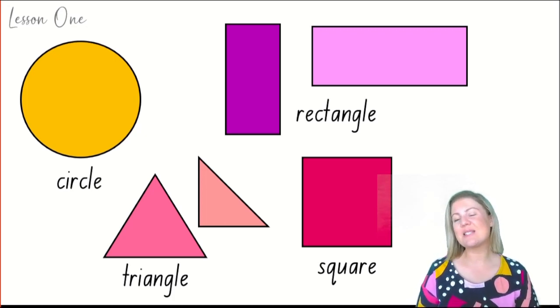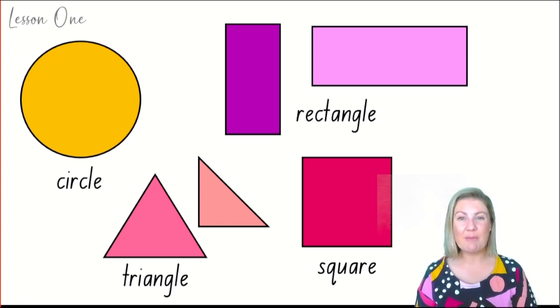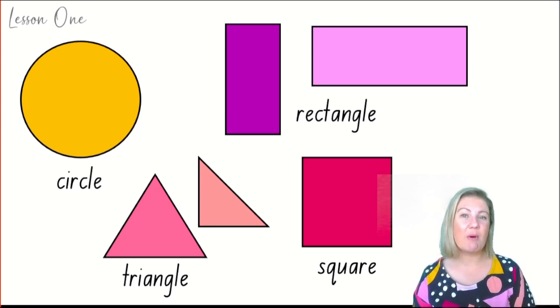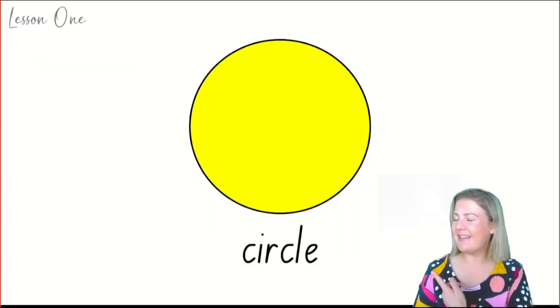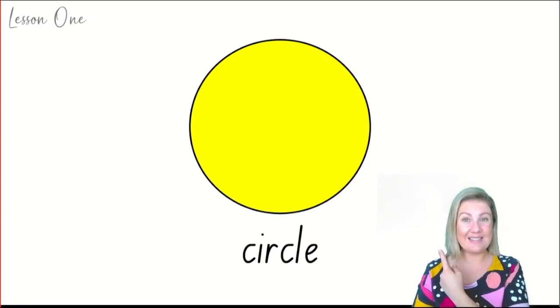Let's take a look at a circle together first and we can talk about that word features. We can observe and talk about what we notice about a circle. I'm thinking about a circle. Can you see a yellow circle? This is the word circle and here's a picture of a circle.